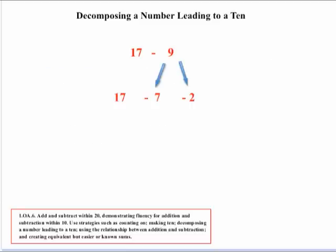For example, take 17 minus 9. Looking at 17, if you take away 7, that's a 10. So you can decompose the subtracting 9 into subtracting 7 and subtracting 2, with the intent of getting a 10. That makes it much simpler: 10 minus 2 is 8.